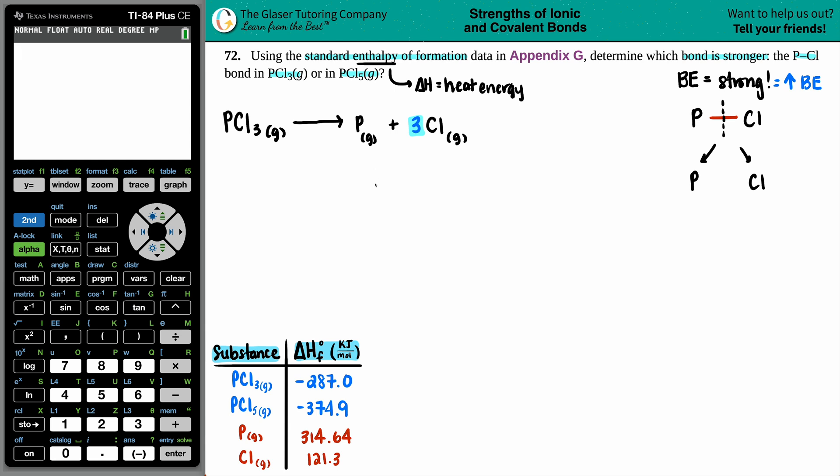Let's use our enthalpy of formation. This is where I went to Appendix G. I wrote down all the delta H values for the substances we're using today. PCl3 is negative 287.0, phosphorus is 314.64, and chlorine is 121.3.